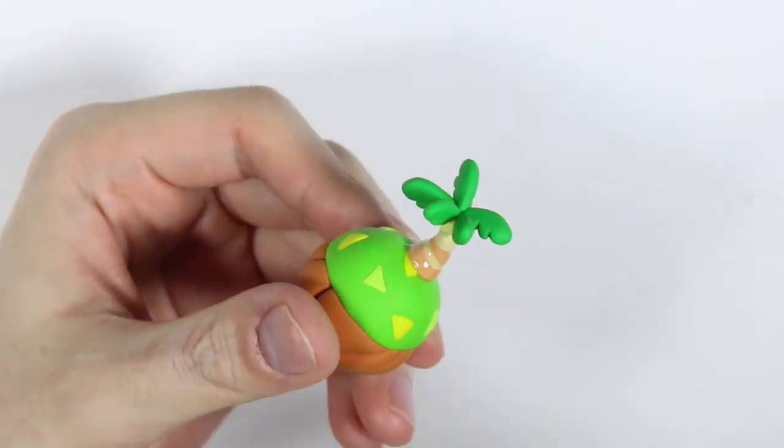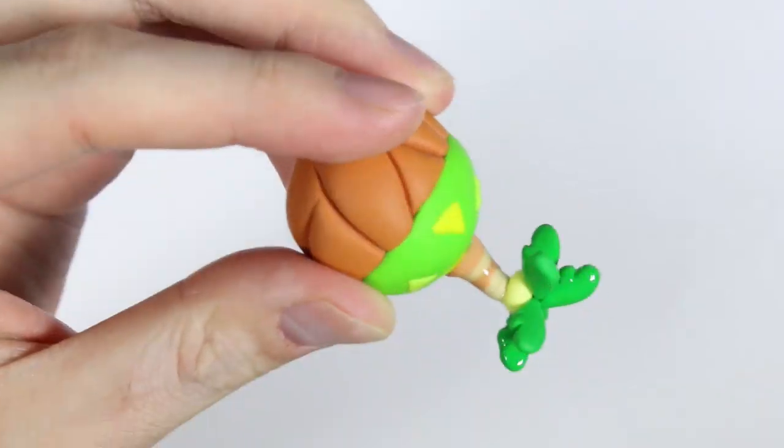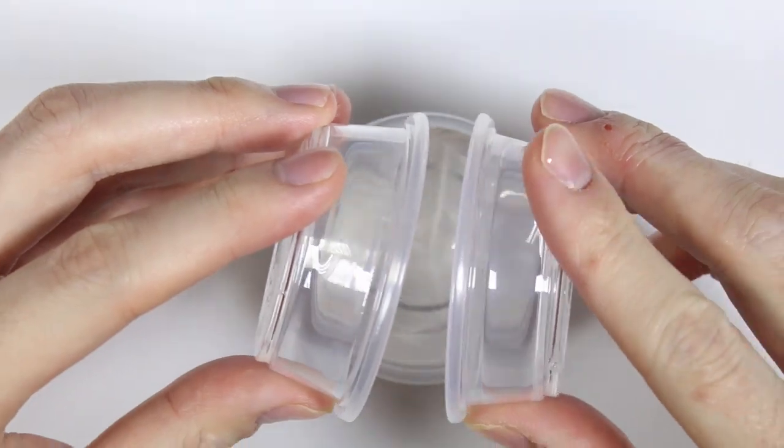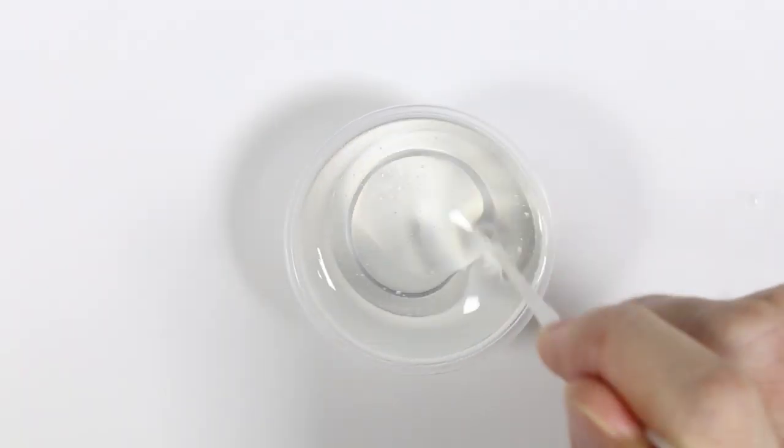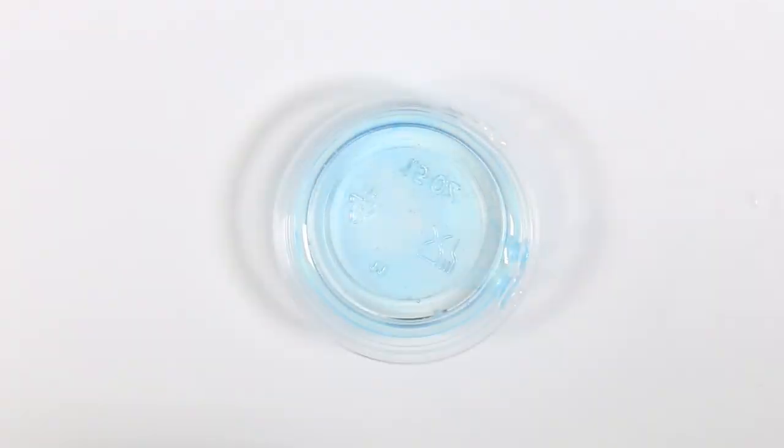And once fully baked I'm just taking some UV resin and a paintbrush and I'm just painting on a layer of glaze. And then once that is cured, we're going to make the water. So I'm mixing my two-part resin and adding my blue pigment.